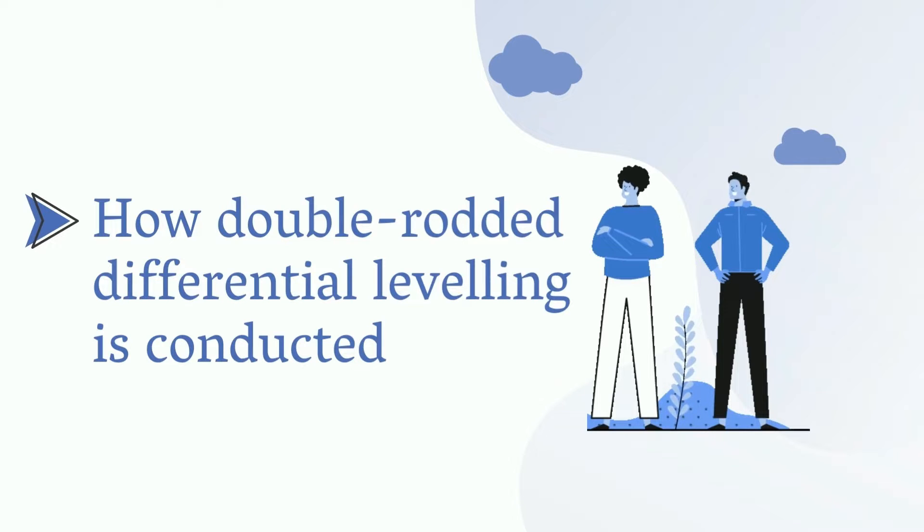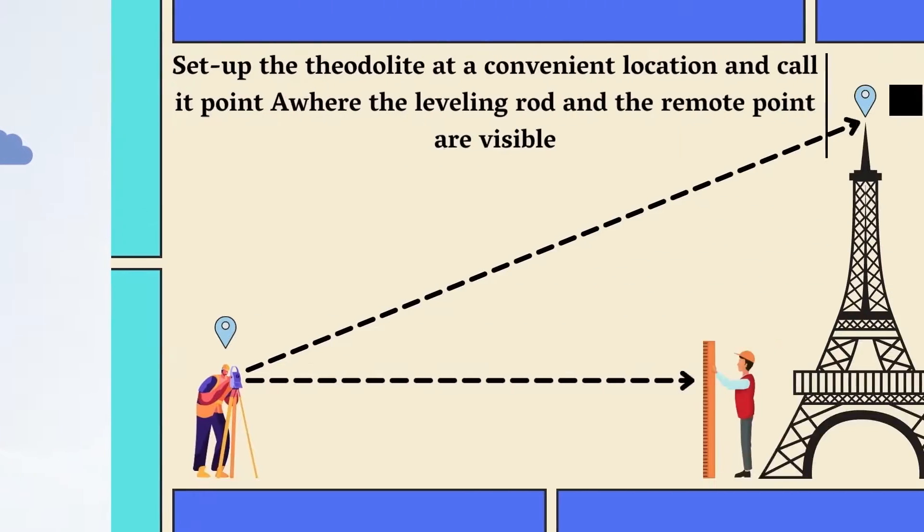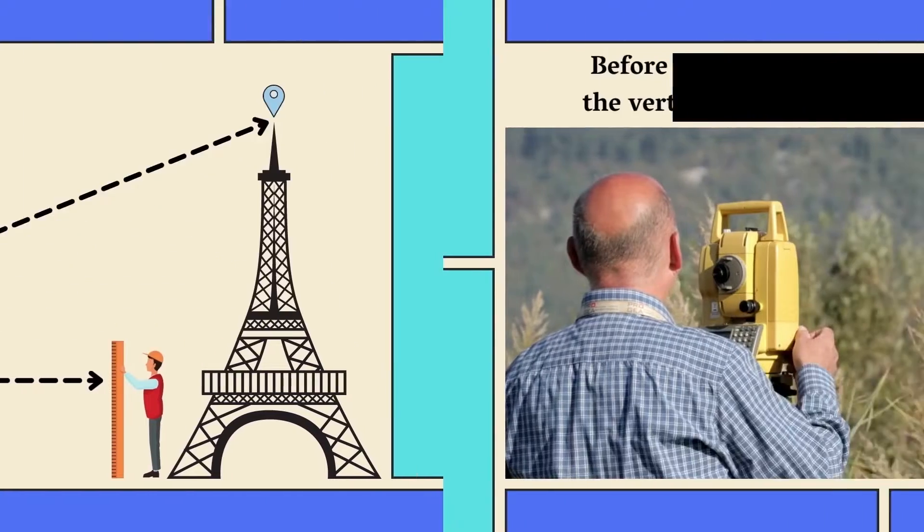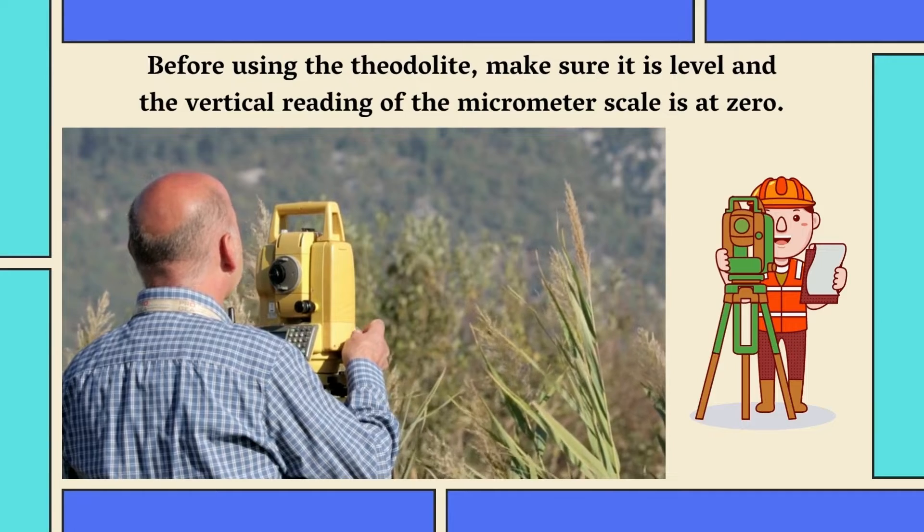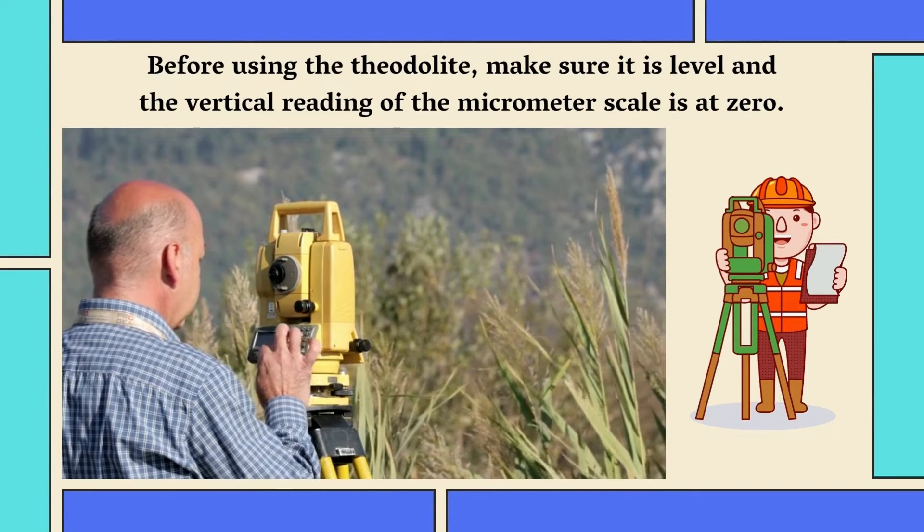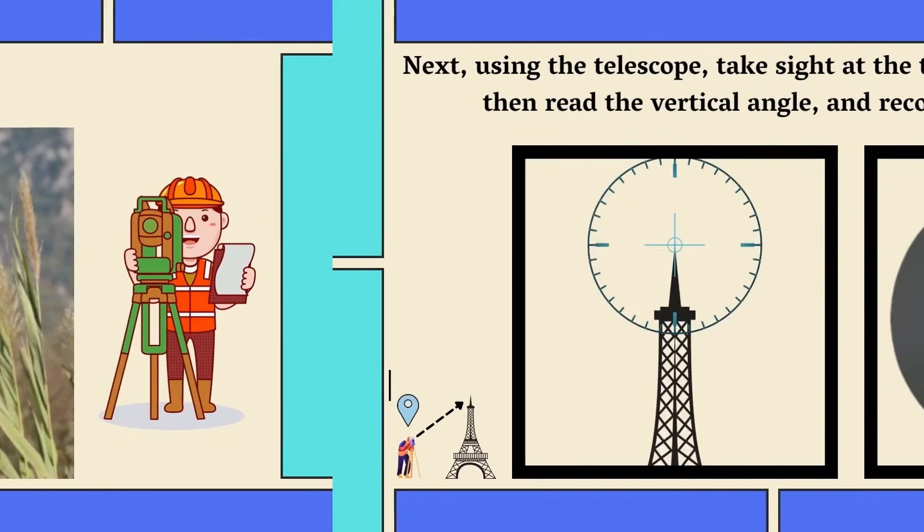Now, let us move on to how double-rodded differential leveling is conducted. First, set up the theodolite at a convenient location and call it point A, where the leveling rod and the remote point are visible. Note that the remote point is a structure of interest in which we want to know its height, for example, a tower. Before using the theodolite, make sure it is level and the vertical readings of the micrometer scale is at zero. Micrometer scale will be discussed later.